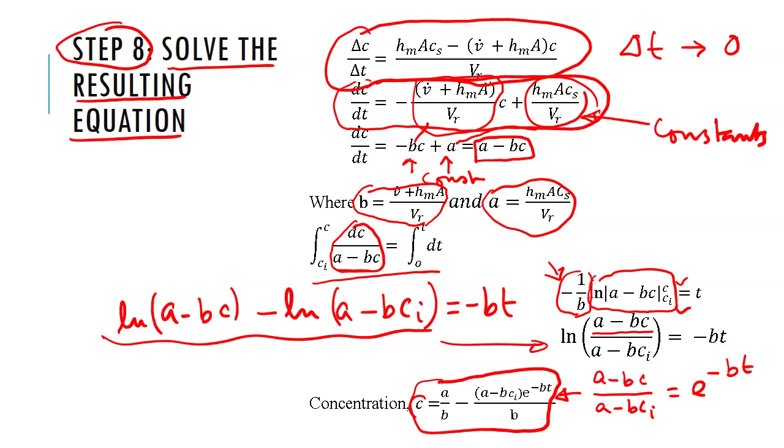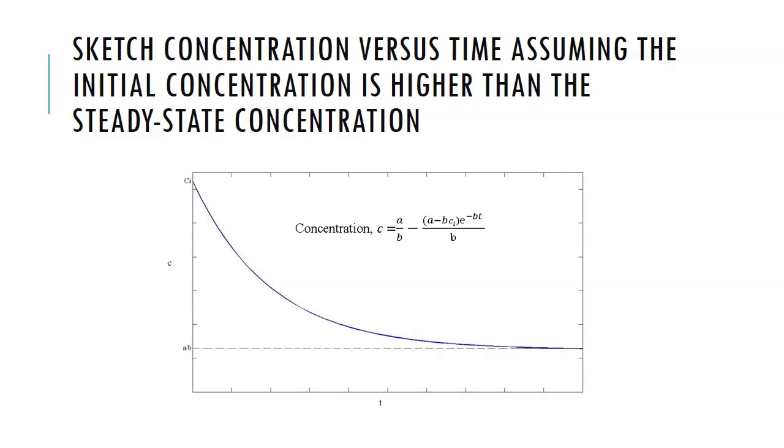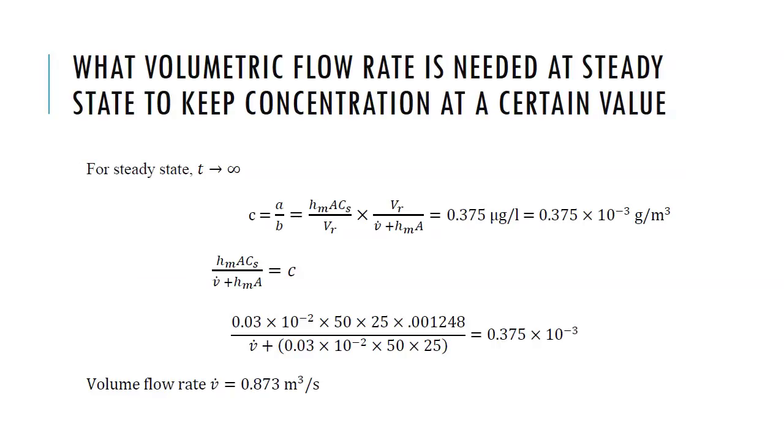If I plot that concentration versus time, so this is my C, this is my time, then it's an exponential. So it starts from a value and then it goes down to some steady state. So what is my steady state value? If you look at the solution and you plug in T goes to infinity, then you get C equal to A over B. That's my steady state value.